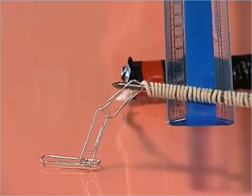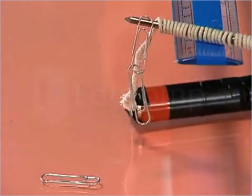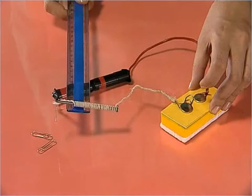Carefully lift the nail using a plastic ruler. Do not touch the copper wire with bare hands. The clips are still attached to the nail. This proves that the nail has become a magnet.